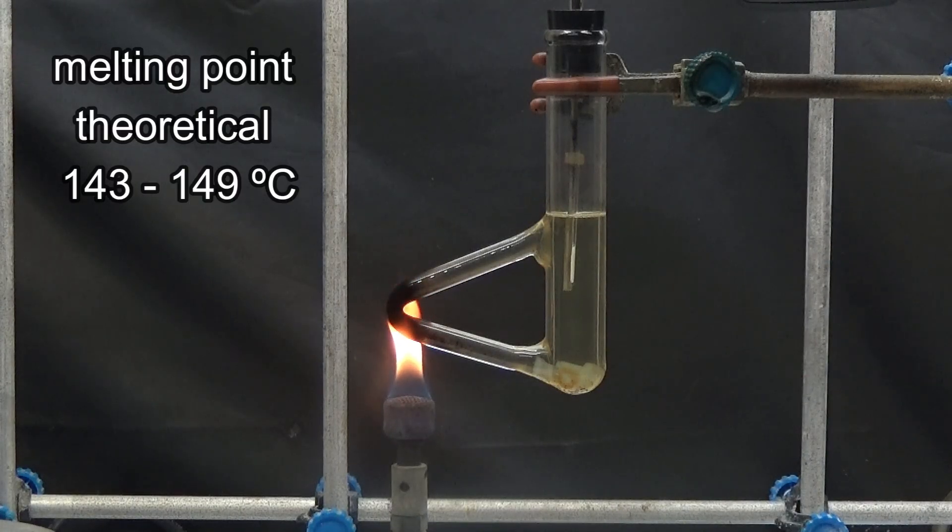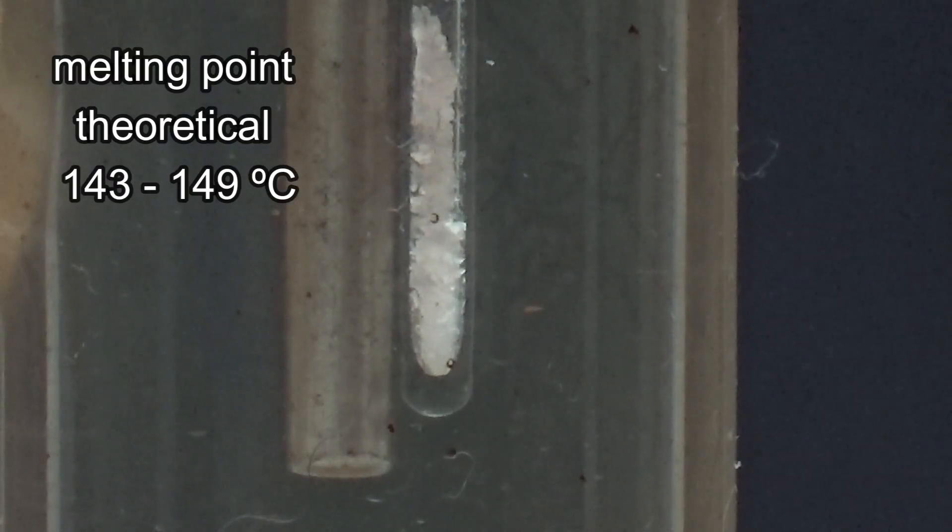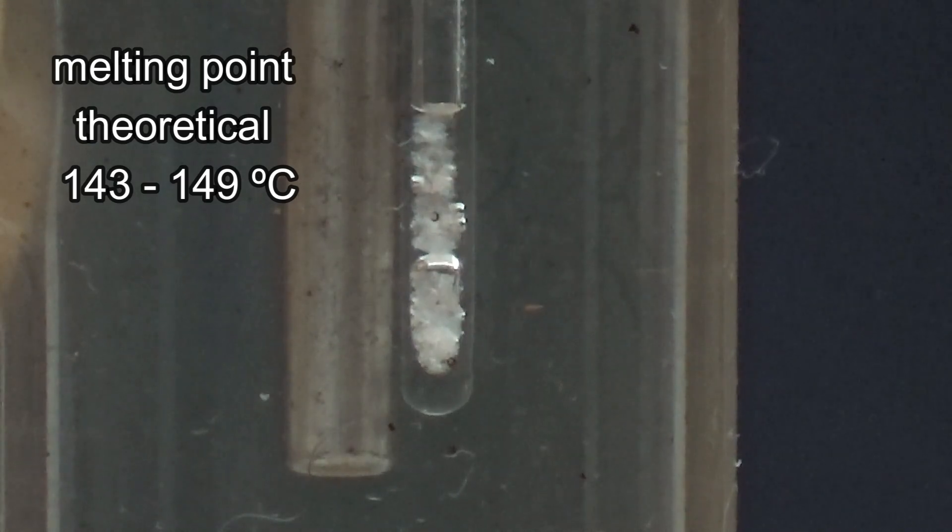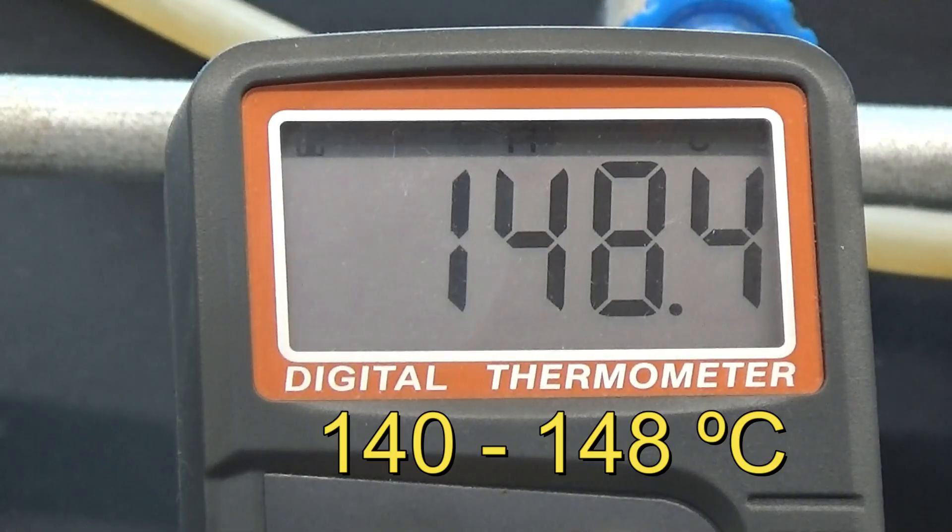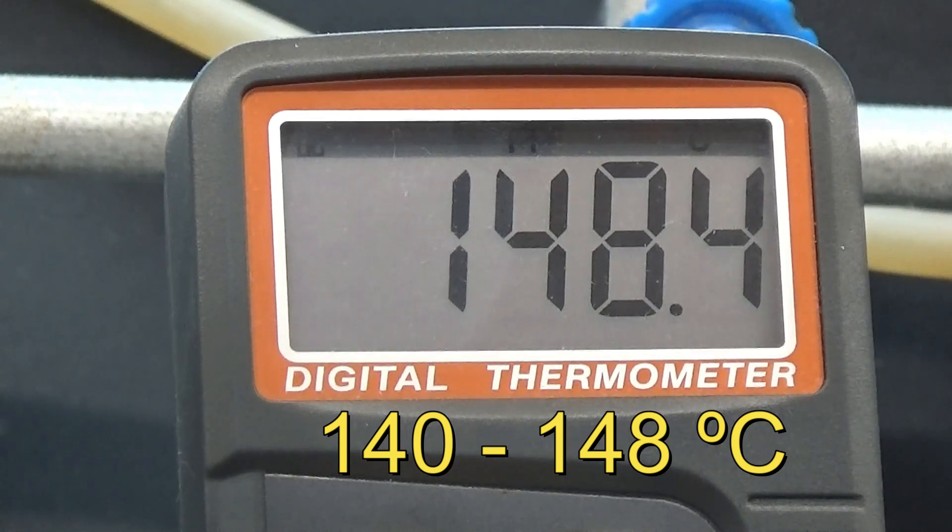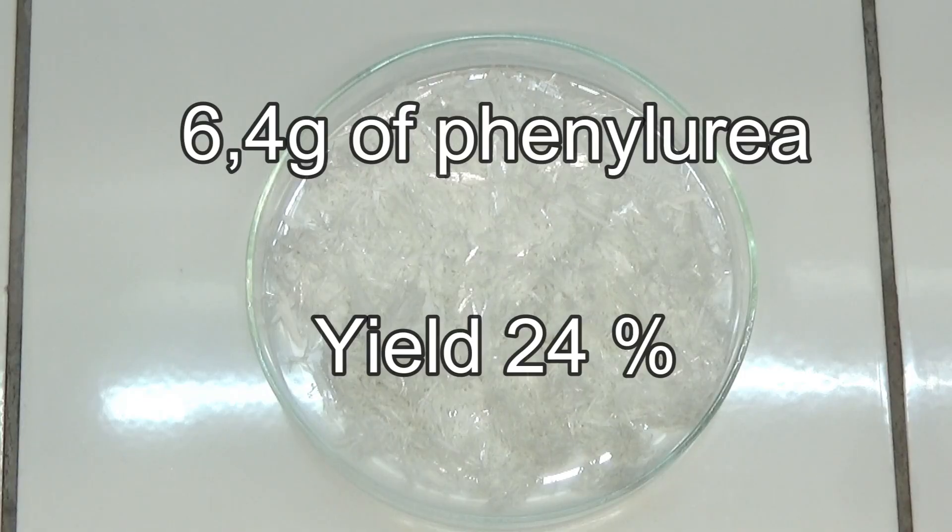Our objective is to determine the melting point, which must be within the range of 143 and 149 degrees. In our test, a value of 140 to 148 degrees was obtained, which was a fairly pure product. A yield of 24% was achieved for 6.4 grams of phenylurea in relation to aniline.